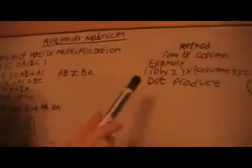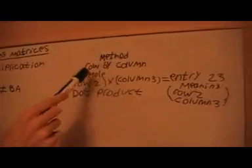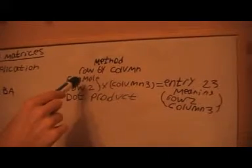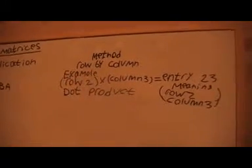In this video, we're going to learn about how to multiply matrices. The method is we'll multiply a row by a column, a row in the first matrix by a column in the second matrix.